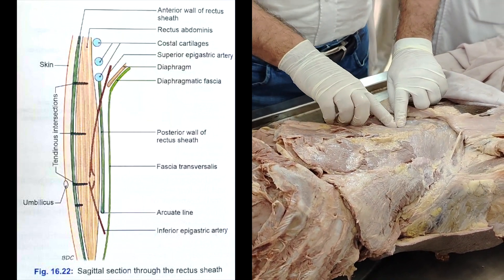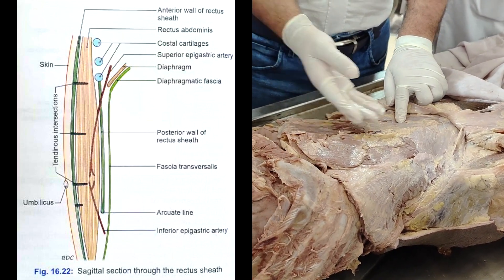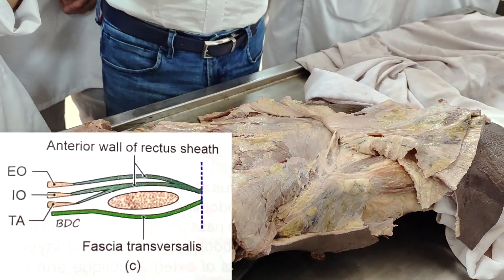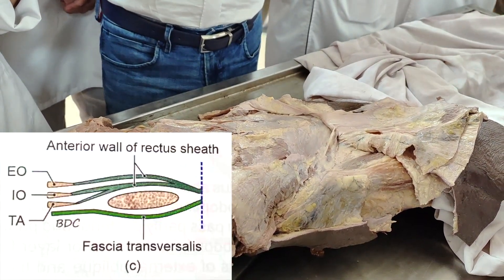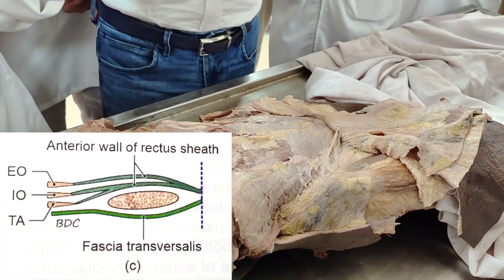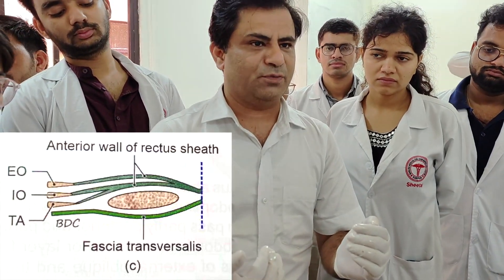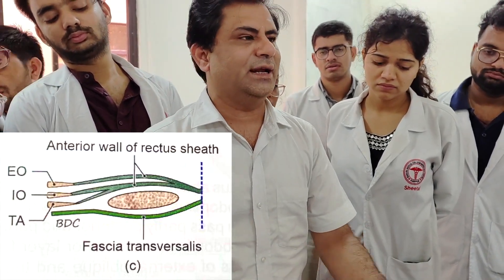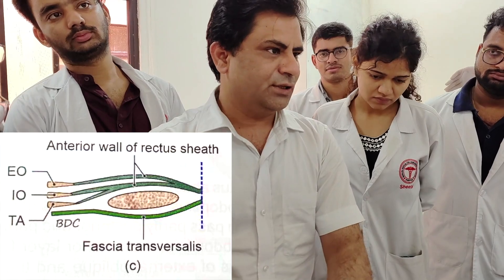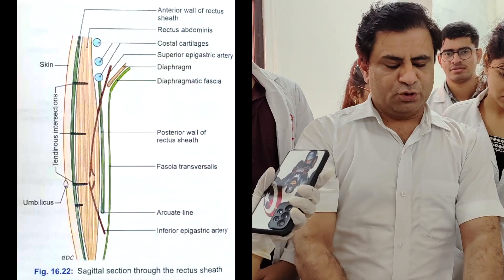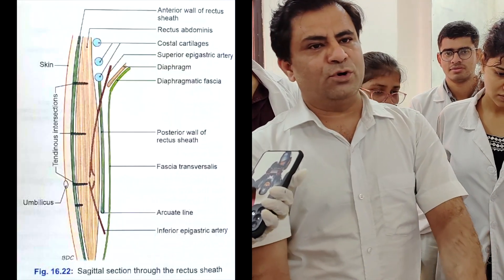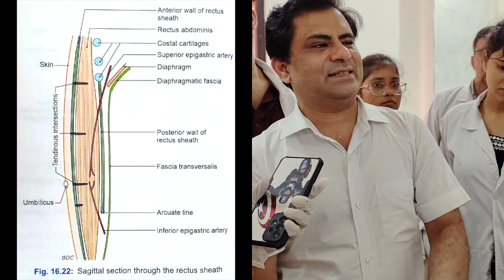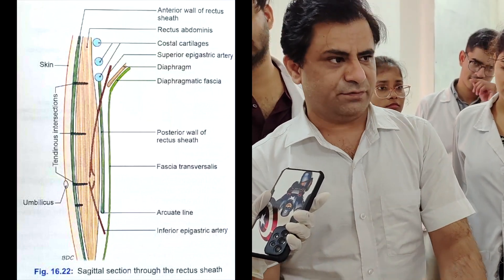At the arcuate line, you don't find the aponeurotic rectus sheath behind. Instead, the posterior lamina of the internal oblique and the transversus abdominis aponeurosis all come to join the anterior wall of the rectus sheath. So posteriorly, the lowermost portion of the rectus abdominis is resting on the fascia transversalis.